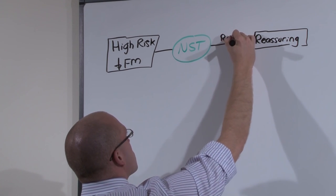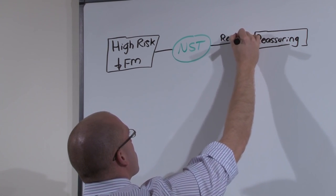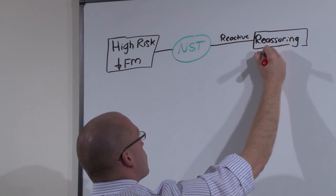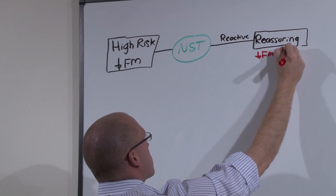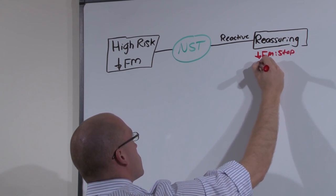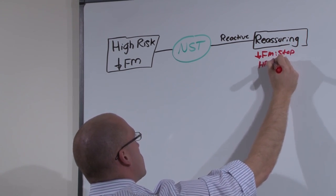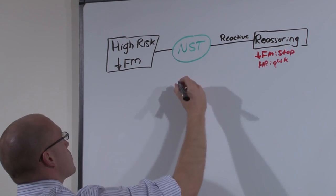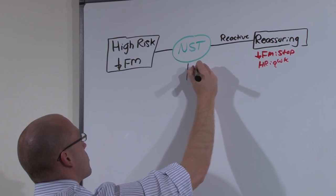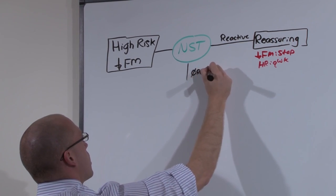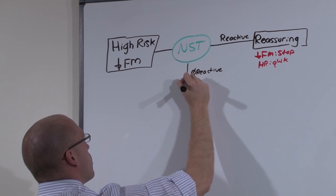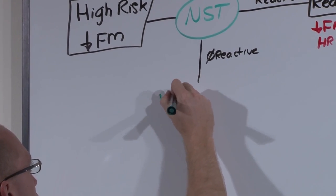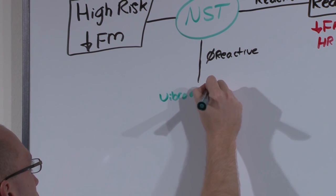A reactive non-stress test with good variability and normal rate is reassuring. If mom came in for decreased fetal movement, you can stop testing — baby's doing good. If she was high risk, you're going to continually assess her every week. Now if the non-stress test was not reactive — you didn't see moderate variability or the heart rates were not in the correct range — you're going to try vibroacoustic stimulation. Baby might just be asleep.